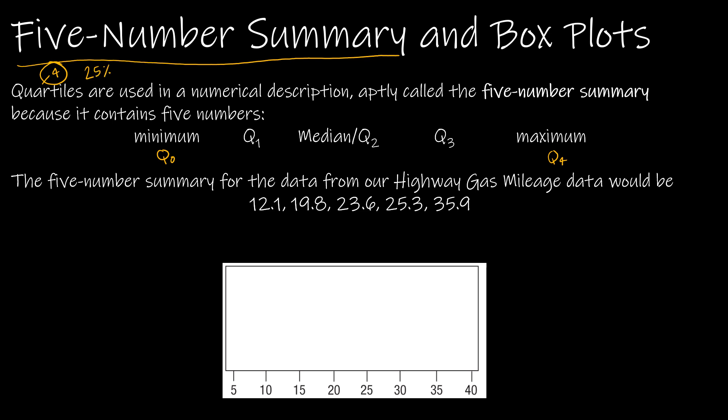Each part contains 25% of our data. I'm a very visual person, so let's take a look at the visual we get when we use the five-number summary: the minimum, the first quartile, the second quartile (also the median), the third quartile, and the fourth quartile (also the maximum). Hopefully you've joined us for our last video, because we did the work to find these values — our min, first quartile, median, third quartile, and max. So this is our five-number summary.